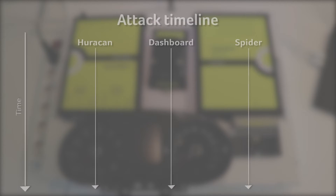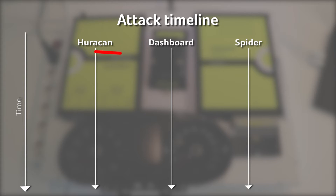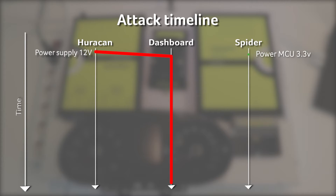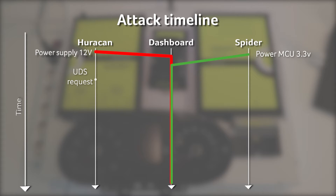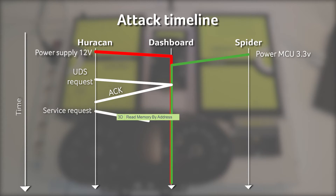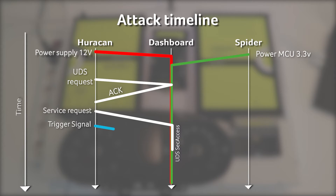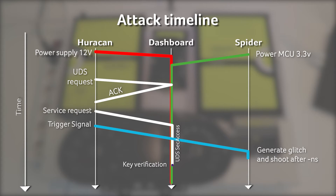To explain the attack in detail, we will use a timeline sketch. The process starts with Huracan providing power to all the electronic components of the dashboard except to the microcontroller. This microcontroller is powered with 3.3 volts by Glitch Amplifier 2, and when it is active, we use Huracan to talk to it. During the communication cycle, Huracan sends a UDS request to the dashboard and receives back an acknowledge message. Then Huracan sends a protected UDS service request, such as read memory by address. Because we didn't provide a valid key, this request fails under normal circumstances. So when sending the protected UDS request, the Huracan also sends a trigger to the Spyder, which in turn will generate a glitch. And when the time comes for the dashboard to perform a key verification, the Spyder will do the glitching.